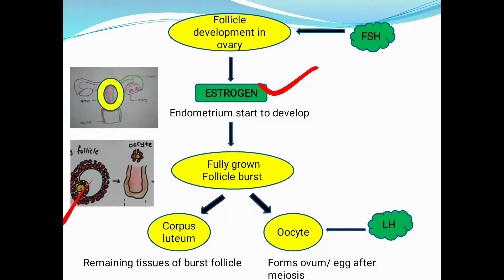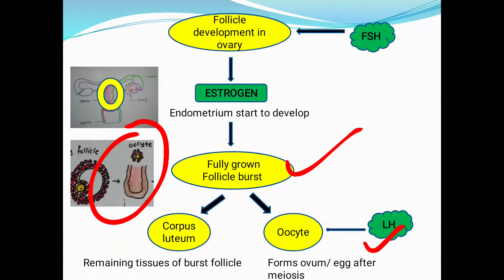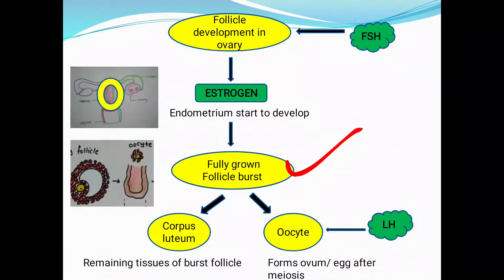Once the follicle grows completely, the oocyte is ready to come out. The follicle breaks and the oocyte is released — this process of rupturing of the follicle and releasing the oocyte is called ovulation. Ovulation takes place in the presence of luteinizing hormone (LH). The remaining burst follicle tissue forms the corpus luteum, while the oocyte is also released.